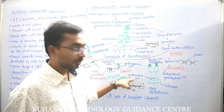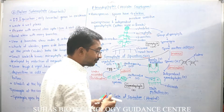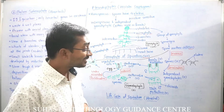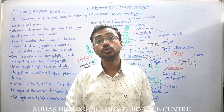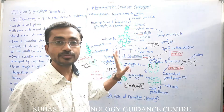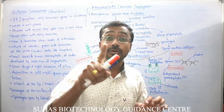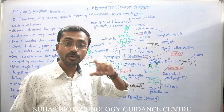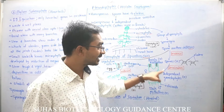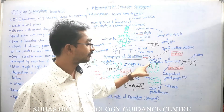Antheridia are developed on the male prothallus, and archegonia are formed on the female prothallus. Whether a spore will form a male or female prothallus is not fixed — it depends on the environment at the time of germination. The environment decides whether spores germinate into a male or female plant — this is environmental sex determination. It has also been observed that smaller spores tend to develop into male prothallus, while bigger spores generally develop into female prothallus. Both male and female prothallus are haploid, since they are formed from haploid spores.